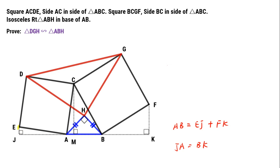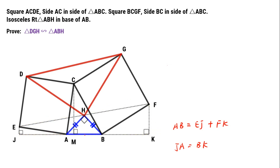Let's focus on points E, J, F, K — they form a right trapezoid. Let's find the midpoint N of segment AB and connect HN. Because triangle ABH is an isosceles right triangle, HN equals one-half of AB and HN is perpendicular to AB.